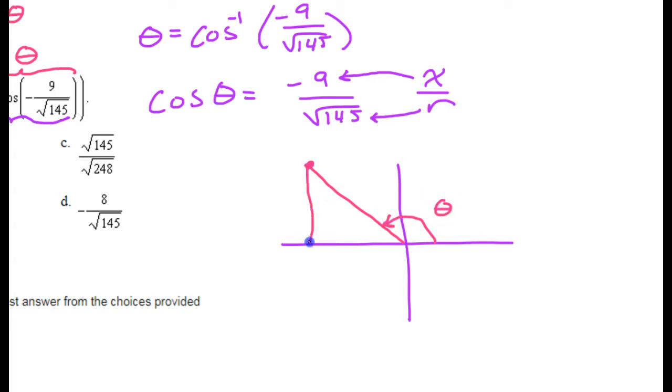But let's make our little triangle. So this hypotenuse is r and we know that's going to be radical 145. We know the x value is negative 9. So this is negative 9 right here. The y value is right here, but we don't know what that is yet.